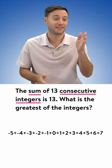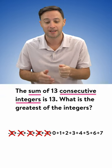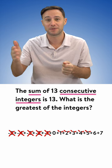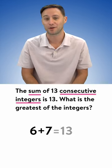The nice thing is that negative 5, negative 4, negative 3, negative 2, negative 1 are all going to cancel out their opposites. So essentially what we're left with is 6 plus 7, which does give us 13.